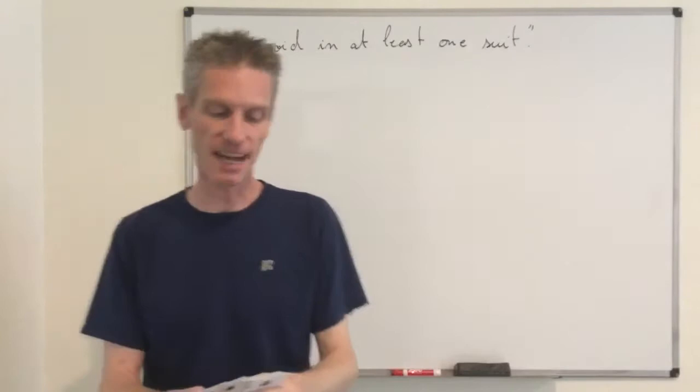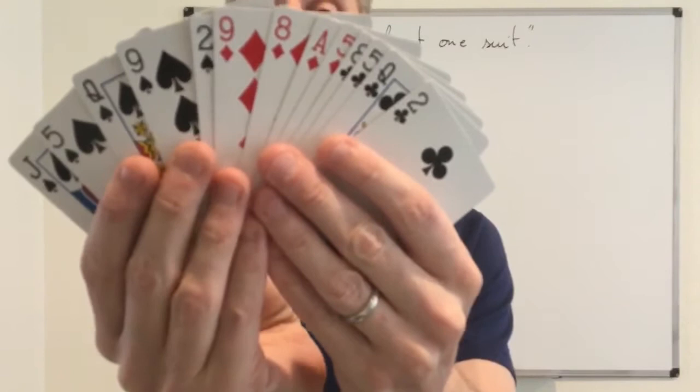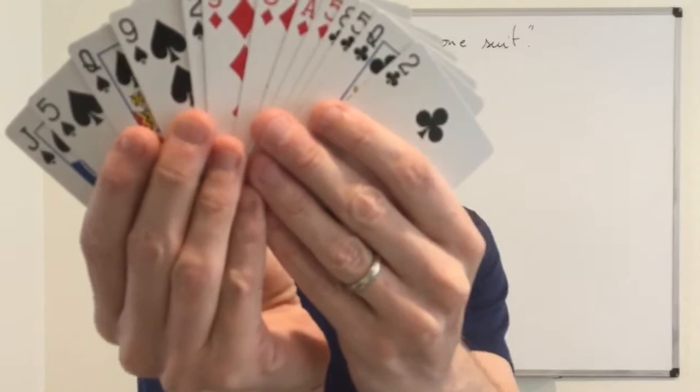We want to find the probability of the event that the bridge hand is void in at least one suit. Here in my hands I will show you an example of such an event. I have a bridge hand that is void in hearts — that's one possible outcome included in event A.